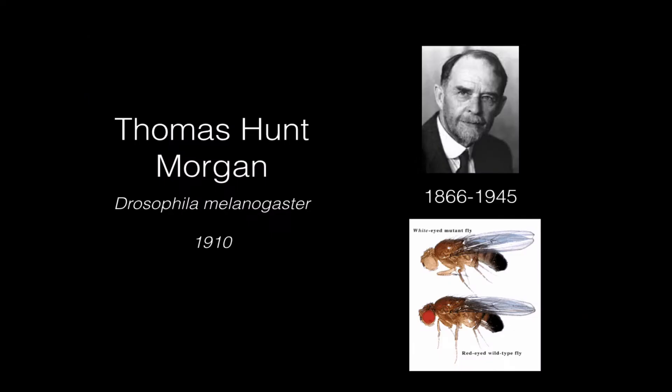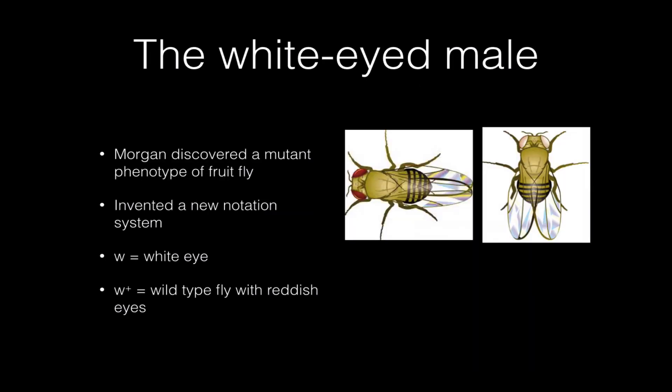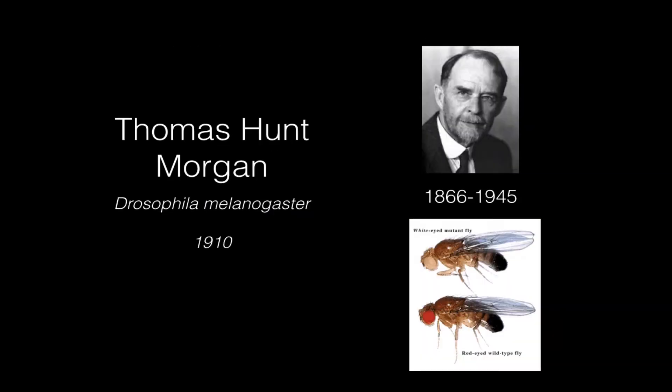Now, Thomas Hunt Morgan was born in 1866 and lived to about 1945, so he was doing most of his work in the early part of the 20th century, and he was doing his experiments using an organism called Drosophila melanogaster. His most famous paper was published in 1910. And what Morgan discovered in his fly experiments is the first known mutation of a wild-type trait. So if you look here at this fly, this fly right here has white eyes. The normal situation for fruit flies is reddish eyes. So we're going to call this type of fly down here wild, and this is the mutant, of course the white-eye mutant.